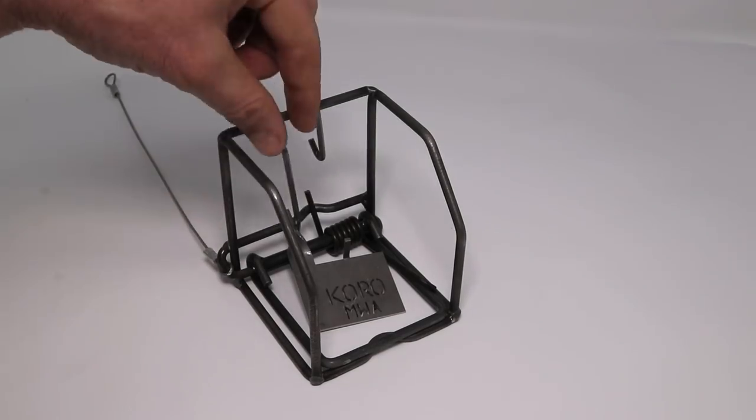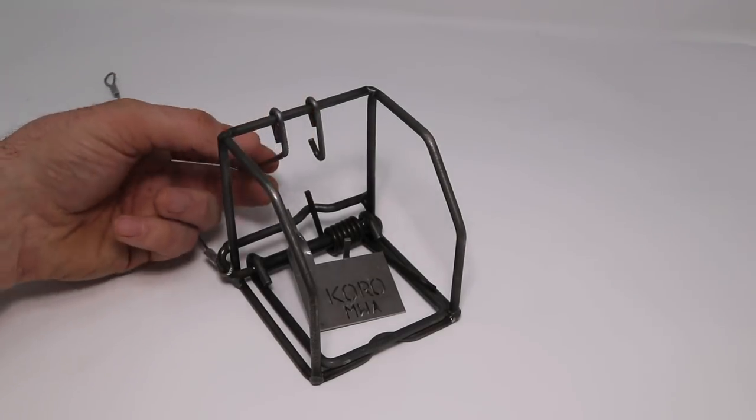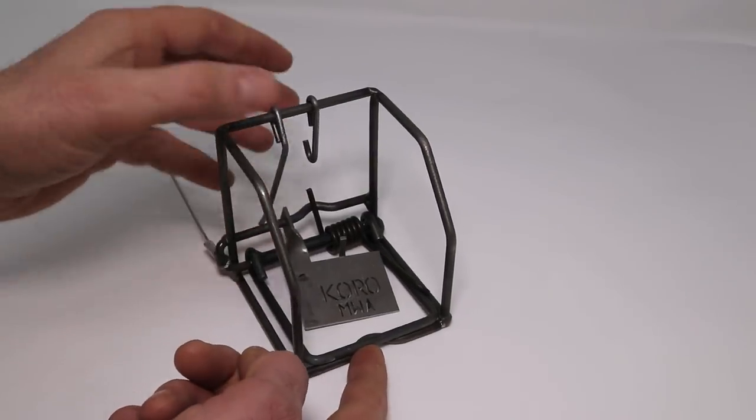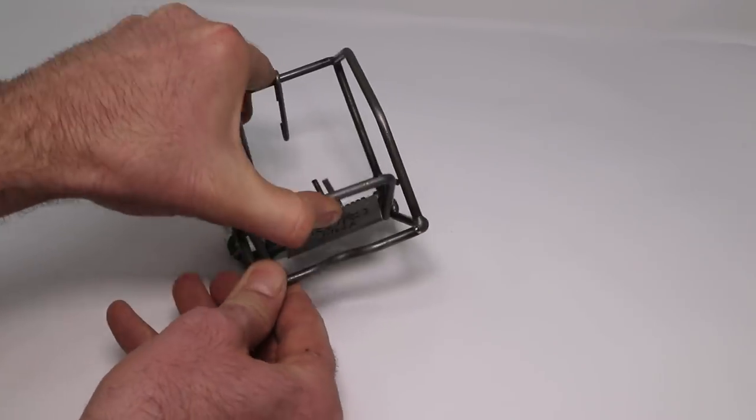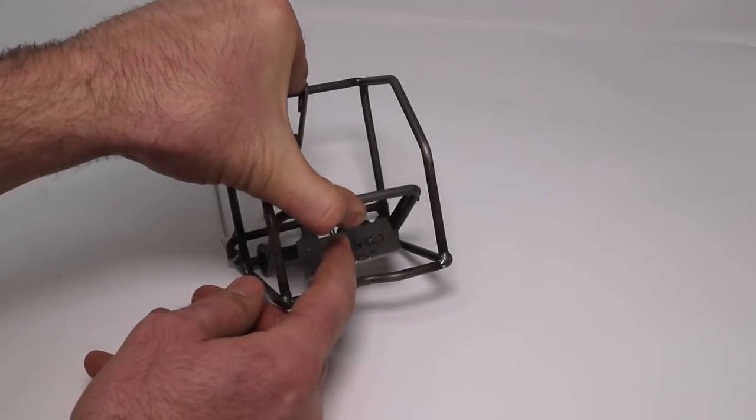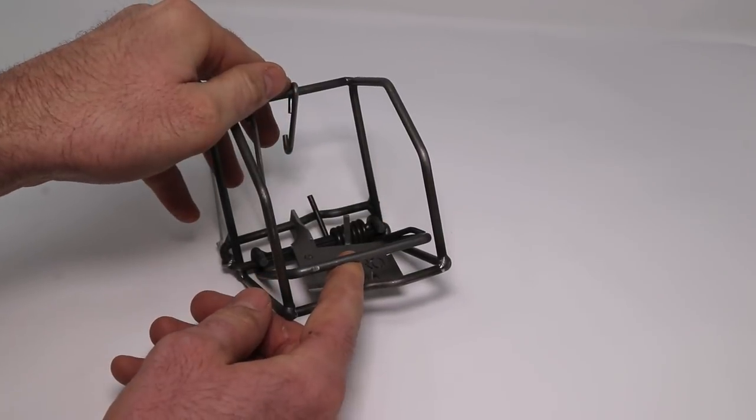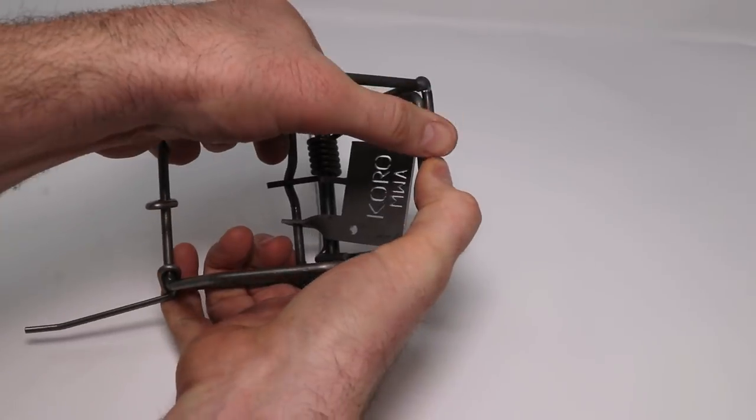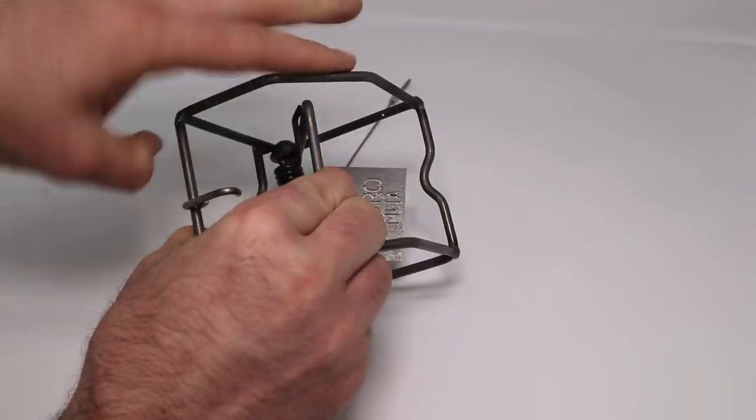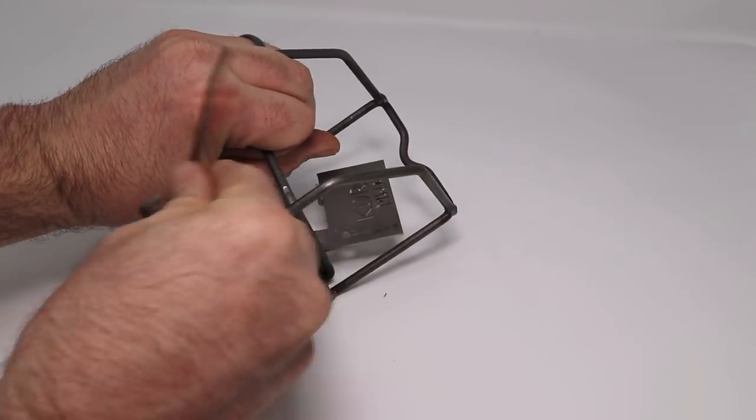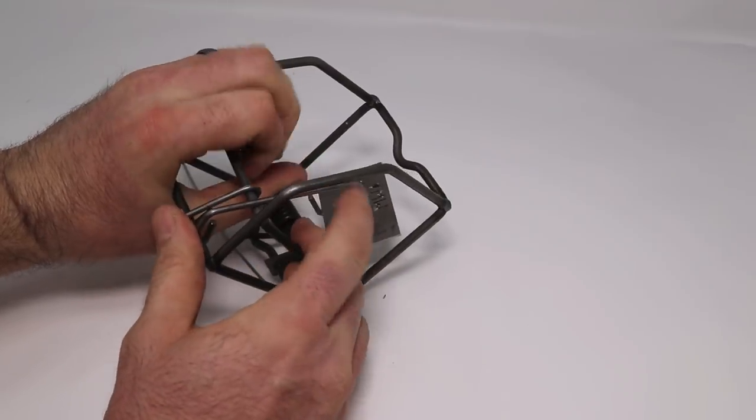Now I'll show you how to set this. First you want to pull the lever back. Here's the spring. Now this is hard to do one handed but you pull that up. If that came down that would break your finger. I'm going to use two hands, pull this back, flip the lever around, put on that safety while I can.